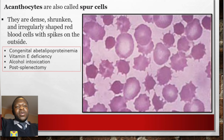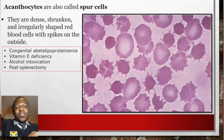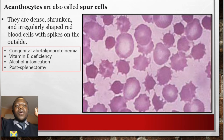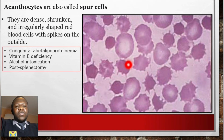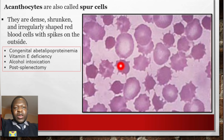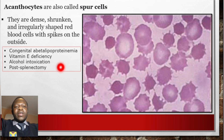Acanthocytes, also known as spur cells, are dense, shrunken, and irregularly shaped red blood cells with spikes on the outside. Acanthocytes are associated with congenital abetalipoproteinemia, vitamin E deficiency, alcohol intoxication, and post-splenectomy.